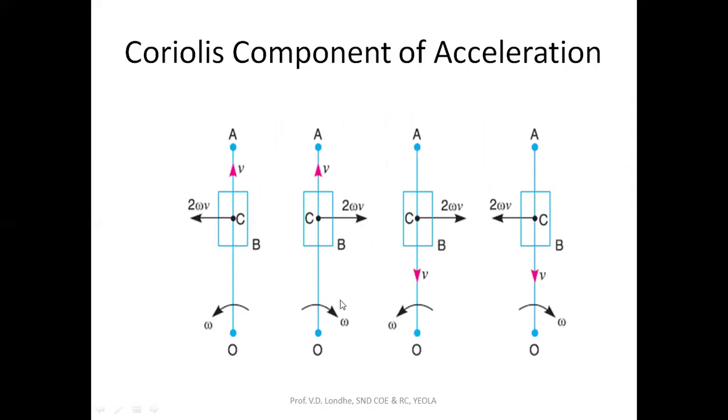If it is in this direction moving outward, then the Coriolis component will be in the direction of that rotation. Reverse is the case when it is having anti-clockwise sense and your slider is coming in opposite direction, then the component will be acting in opposite direction. Similar is the case for clockwise also. These sign conventions are used to plot the Coriolis component, the product of two into angular velocity into slider velocity.